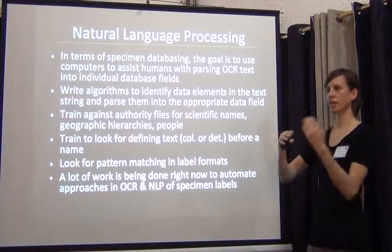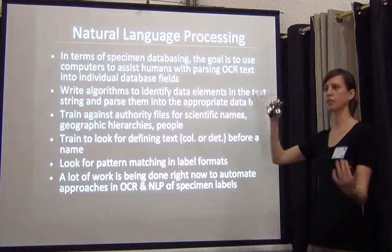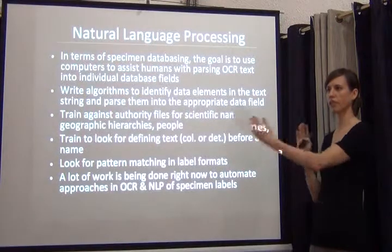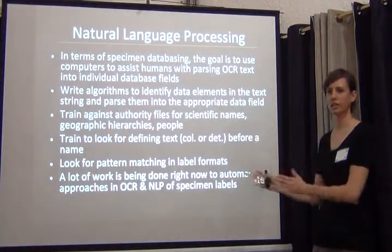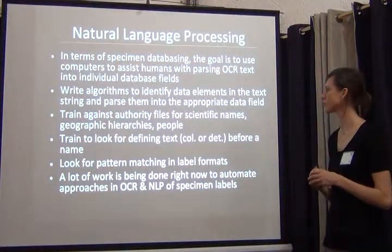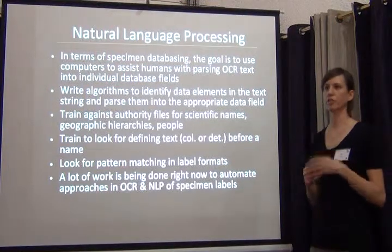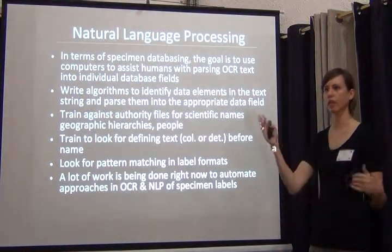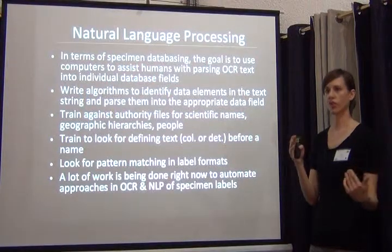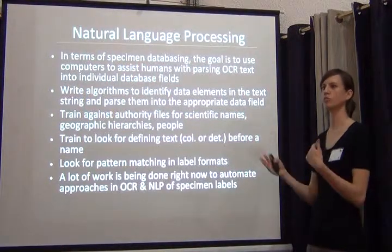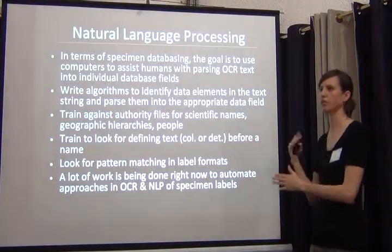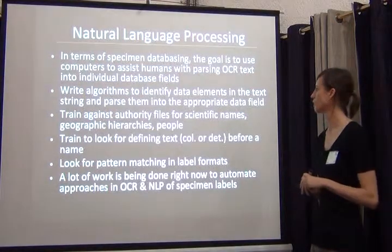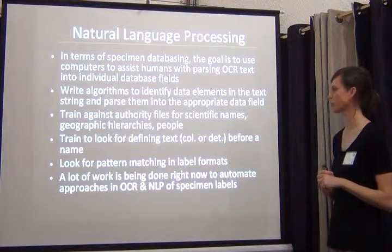You can say these are scientific names, so anytime you see these strings on a label, parse that into a scientific name field. Especially for geography, you can put a whole country name list, so anytime you see any one of these terms for country, those can be parsed into a country field. You can actually do a lot of work with authority files to help with this natural language processing.